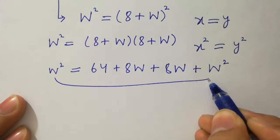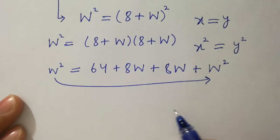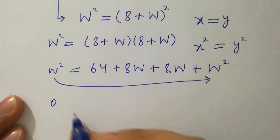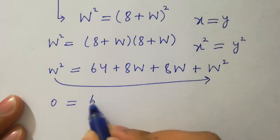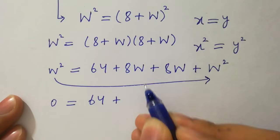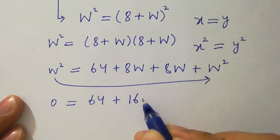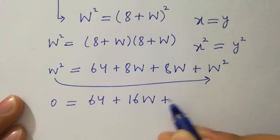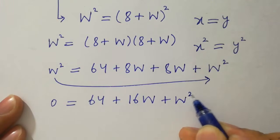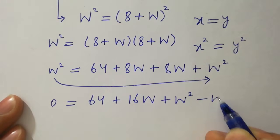W square. If we move this w square on right hand side, we have here 0 equals to 64 plus 8w plus 8w. We have here 16w plus w square minus w square.